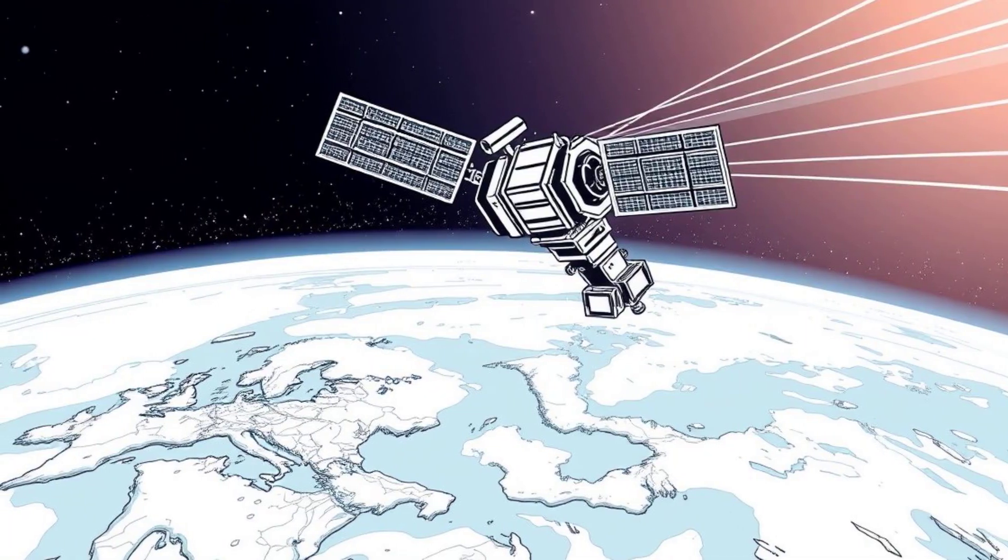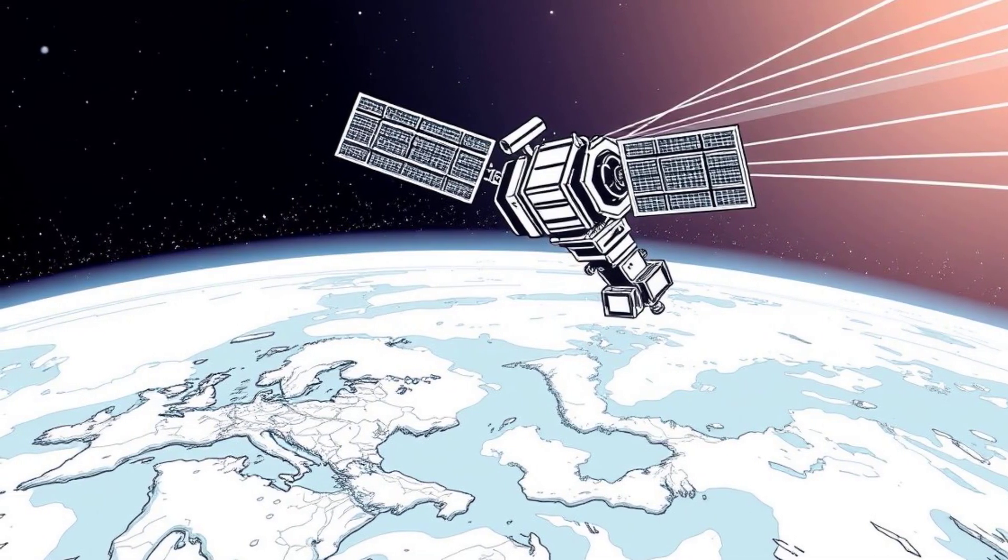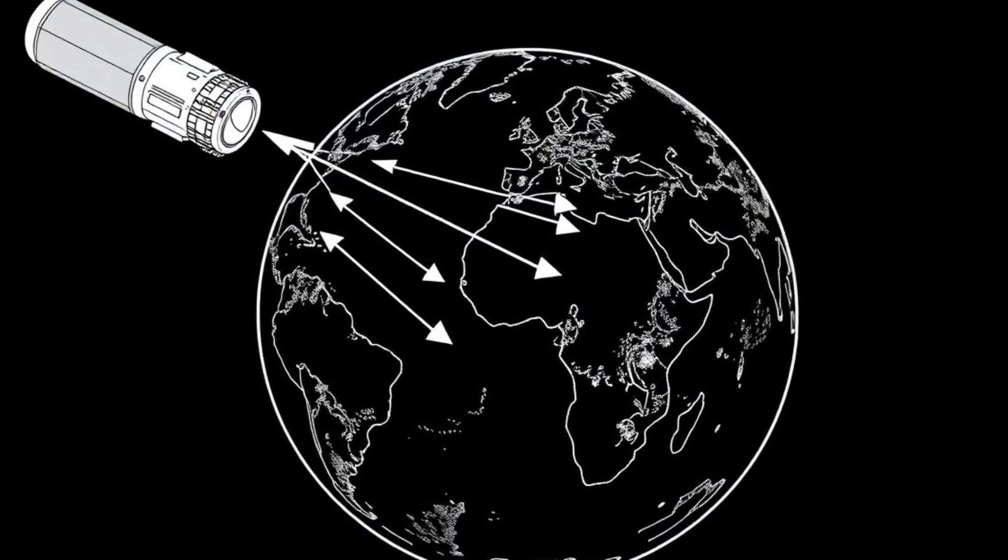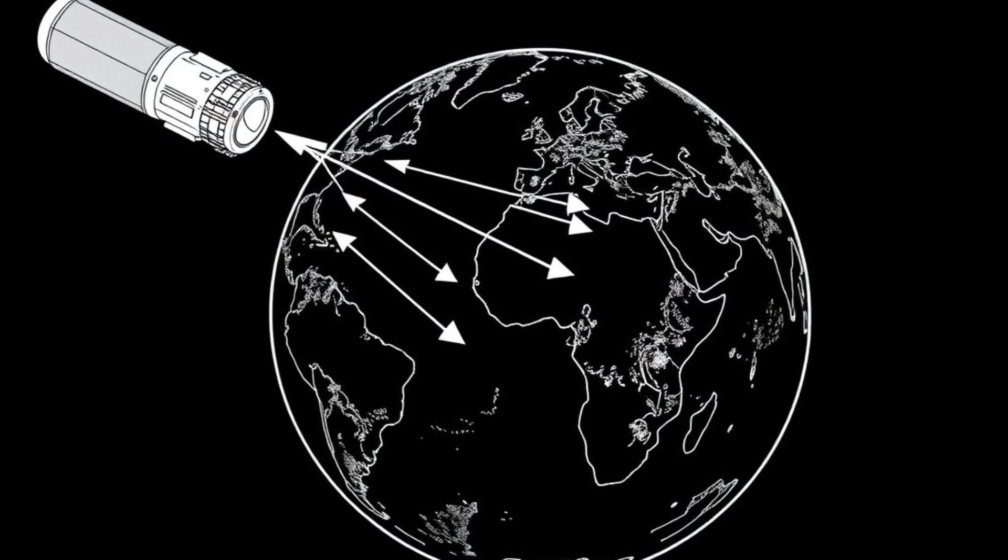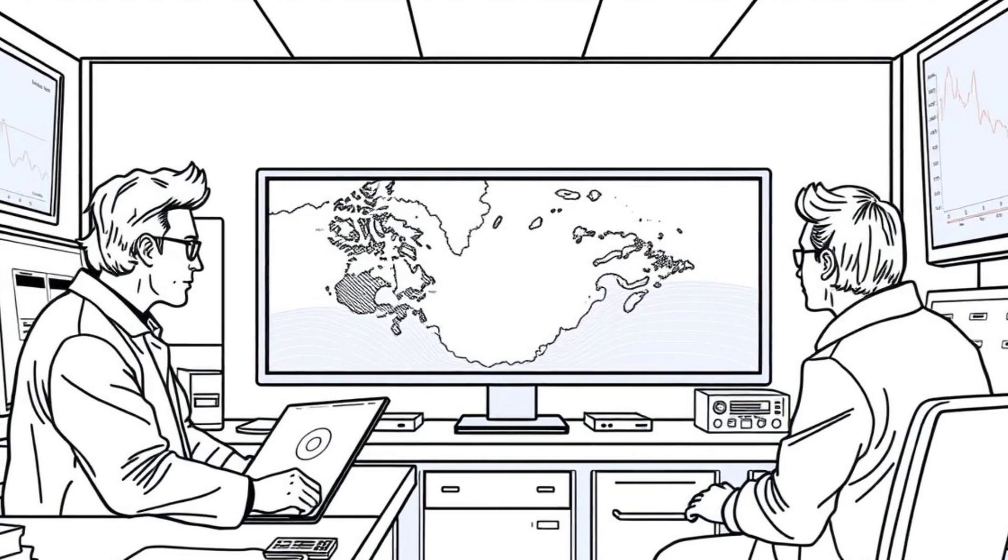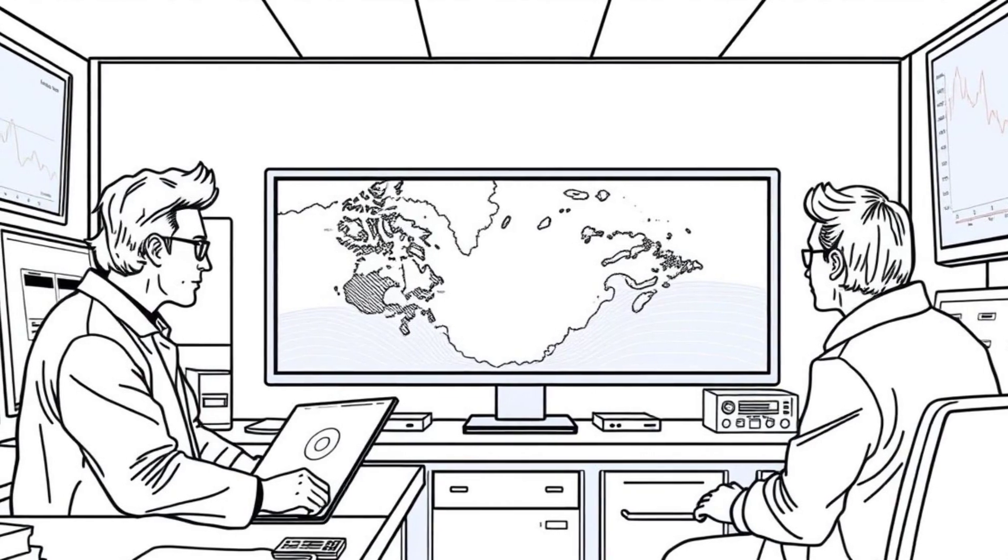One fascinating way scientists study this anomaly is through satellites. The GRACE Satellite Mission, which stands for Gravity Recovery and Climate Experiment, has mapped gravitational differences across the Earth. It confirmed that Hudson Bay has one of the most significant gravitational dips on the planet.